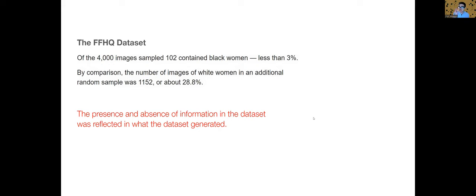And when you compare this to the data set that drove this model, I quickly realized that I couldn't look at them all, but I sampled 4,000 images. Of the 4,000, 102 contained Black women, less than 3%. By comparison, the number of images of white women in a separate random sample was 1,152, or about 28%. And that's when it occurred to me. The presence and absence of information in the data set was reflected in what the data set generated.